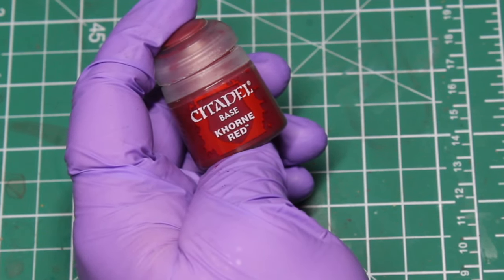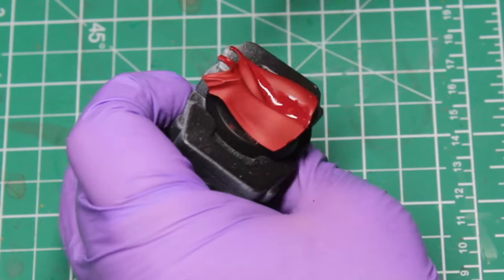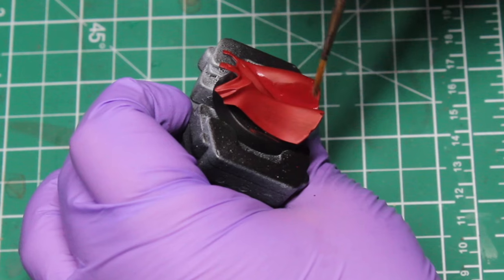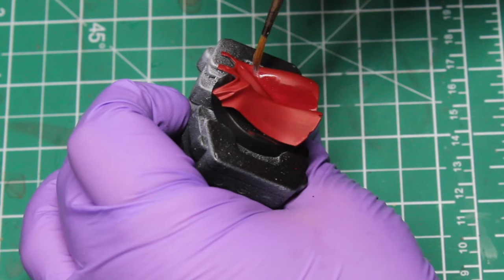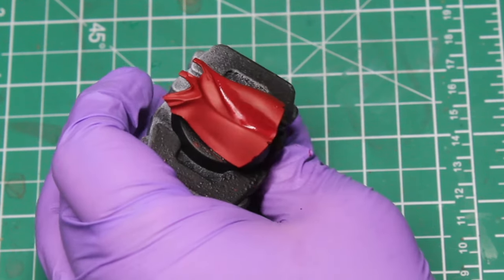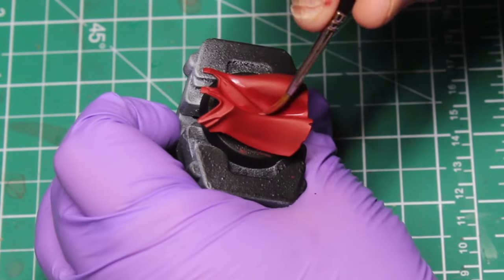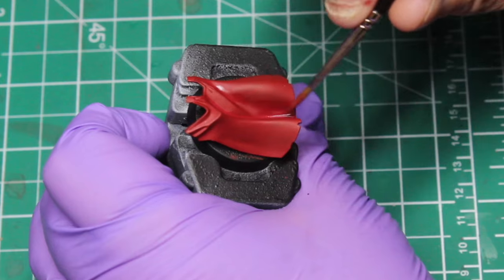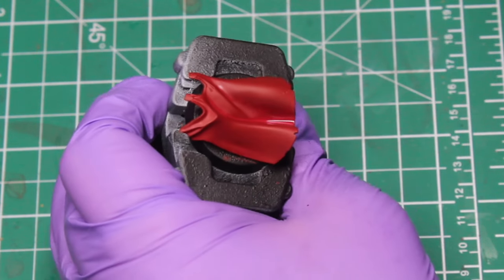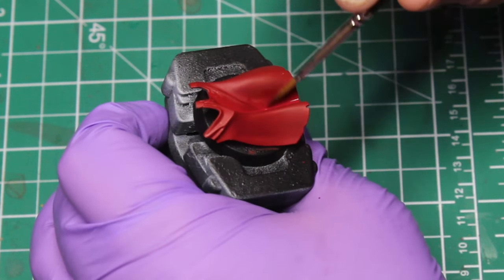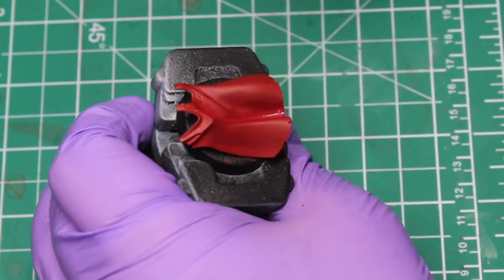We're going to start with the first shade, and that's going to be using a glaze of Khorne Red. Basically what I'm going to be doing is putting that in and rinsing off my brush. As you can see, I'm moving the pigment around. I want the vast majority of the pigment pulling into the deeper recesses. Wherever you lift the brush off the model is basically where the vast majority of the pigment is going to be.